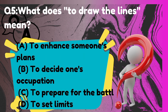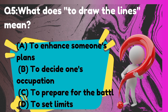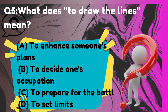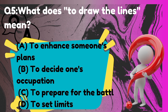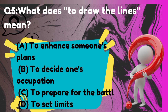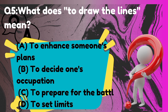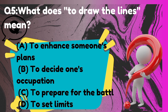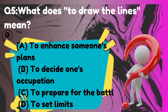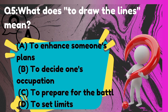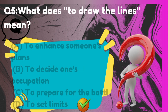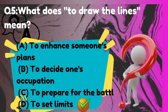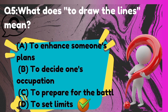What does 'to draw the line' mean? The correct answer is option D: to set limits.